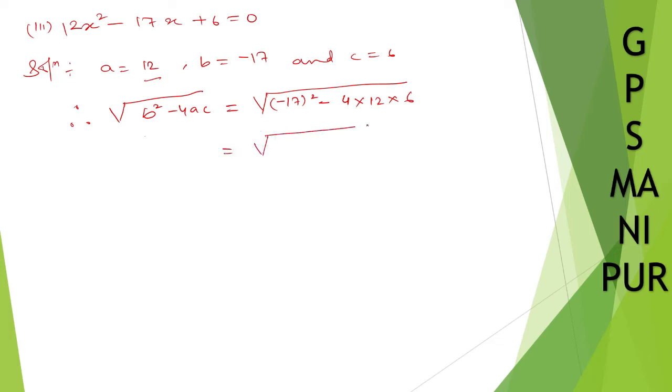So √(17²)... what will be 17 square? 17 × 17, 7 × 7 is 49, 7 × 1 is 7... So 2, 8, 9 minus...